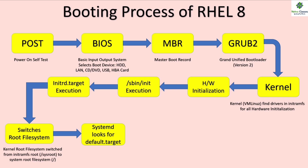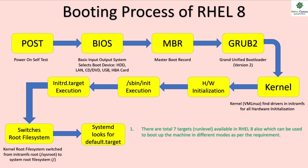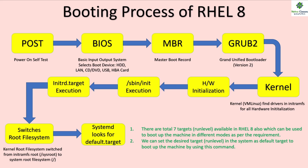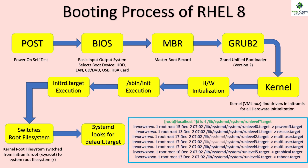We can change or set the default target very easily. There are a total of seven targets or run levels available in RHEL 8 to boot the machine in different modes as per requirement. We can set the desired target as default using the command: systemctl set-default, followed by the target name. If you want to list the available targets, you can execute: ls -l /lib/systemd/system/runlevel*.target. This will show you all targets or run levels from 0 to 6, giving a total of seven run levels.